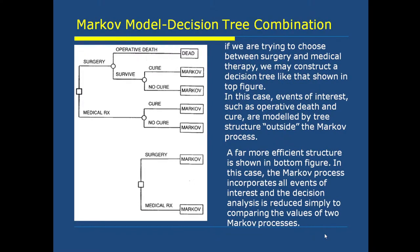A Markov model and decision tree can be combined. If we are trying to choose between surgery and medical therapy, we may construct a decision tree where events of interest such as operative death and cure are modeled by tree structures outside the Markov process. A far more efficient structure incorporates the Markov process for all events of interest, and the decision analysis is reduced simply to comparing the values of two Markov processes.